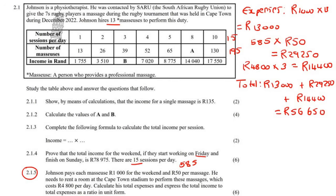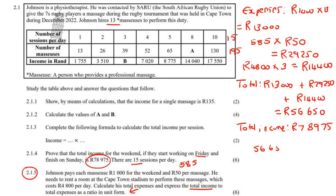Total income was R78,975, calculated in the previous question. We now express total income to total expenses as a ratio in unit form. We place the expenses next to the income and divide both sides by R56,650 — the smaller number — to make it equal to 1. This gives a ratio of approximately 1.39 to 1.